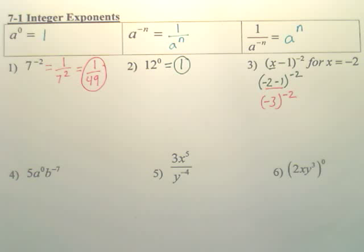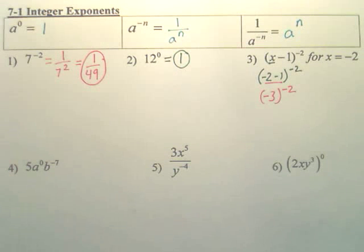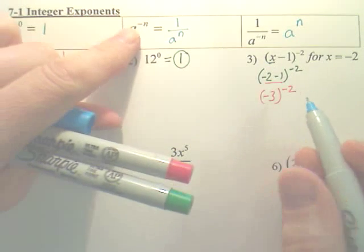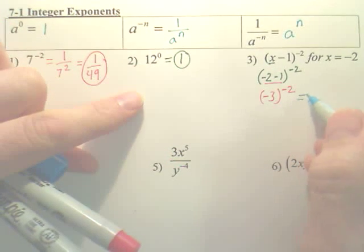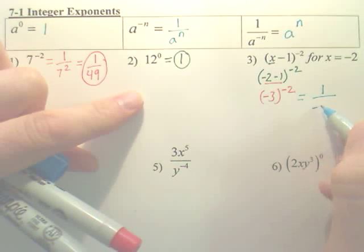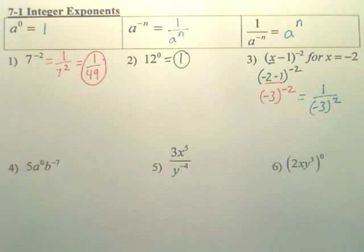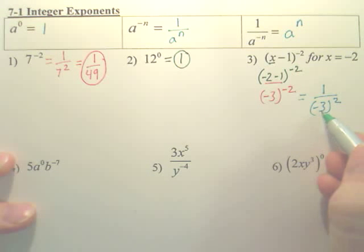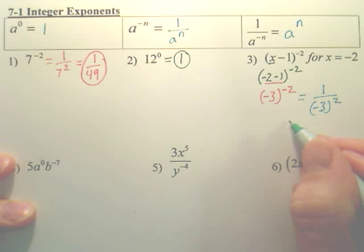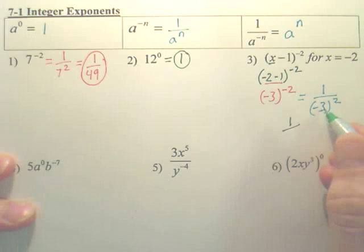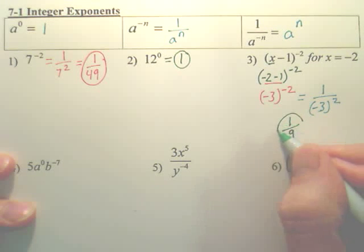Okie dokie. So we now have negative 3 to the negative 2nd power. So again, what we talked about earlier is any time you have a negative power, you flip it. So this is going to be 1 over negative 3 squared. The negative powers flip. And then, last step, what's negative 3 squared? Or negative 3 times negative 3? Your answer would be 1 over 9.